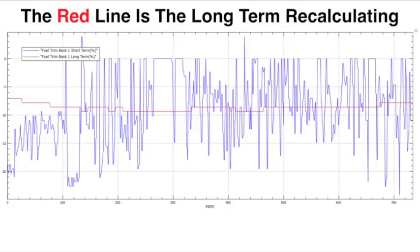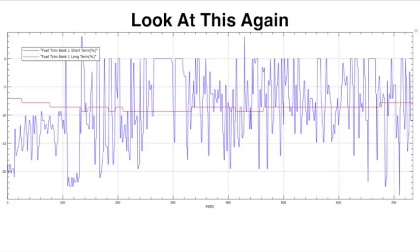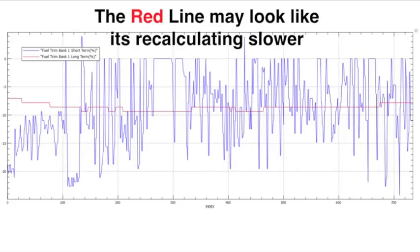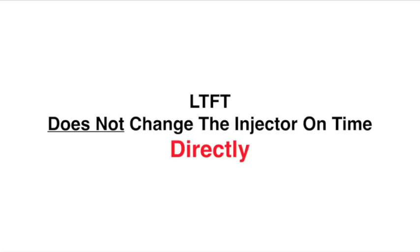Now the red line is the long-term recalculating. Yes, long-term recalculates also. Look at that again now. The red line may look like it is recalculating slower. But it's not slower. It's just not as often. And in smaller intervals. Now the long-term fuel trim does not change the injector on time directly. It changes the fuel trim strategy.